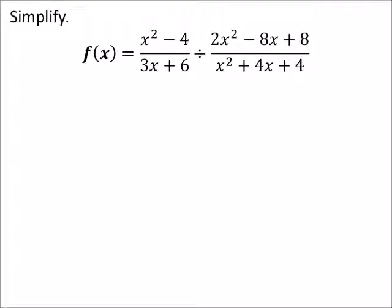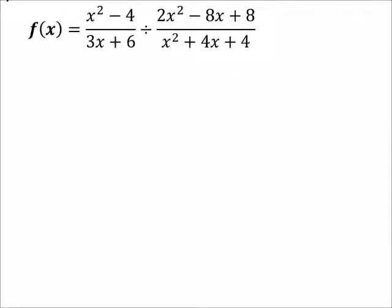All right, so here's one of those problems. This is division of two of these rational expressions where we have polynomials in the numerator and denominators. So the first thing I'm going to do with this is I'm going to change this division problem into a multiplication problem. Now again, it doesn't affect our first fraction, so I still have x squared minus four over three x plus six.